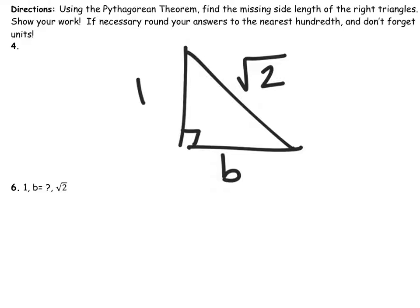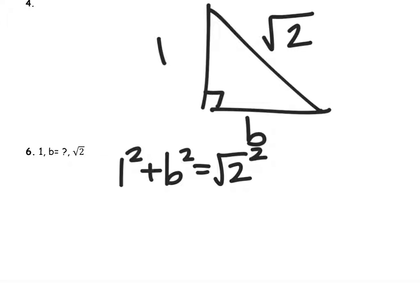We're going to use the Pythagorean theorem to solve this one. So we have the two legs squared. The sum of those is the square root of two squared, and the square root of two squared is two, because that square root and the square cancel out.